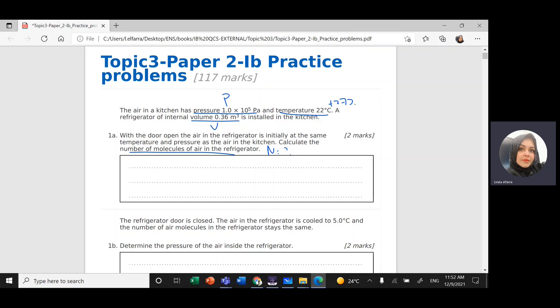We're going to use the ideal gas equation PV equals n times Boltzmann constant times temperature. So n equals PV divided by Boltzmann constant times temperature.